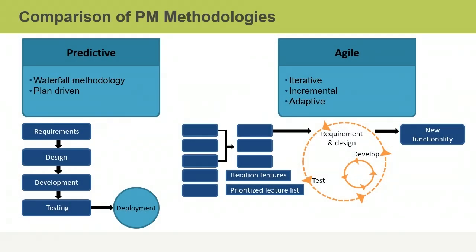The project management methodology you choose for your project will often determine the structure of its phases. You may choose a methodology that has a predictive life cycle, also called a waterfall methodology. In this type of life cycle, the phase-to-phase relationship is sequential. One phase is fully completed before the next phase starts.